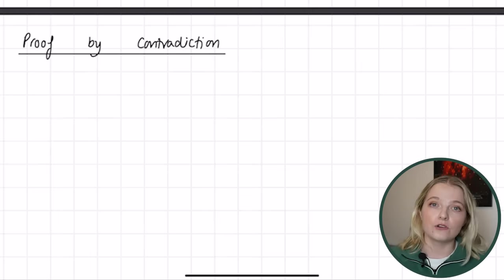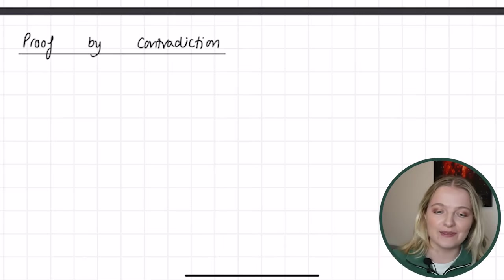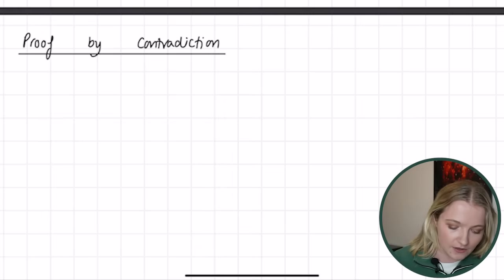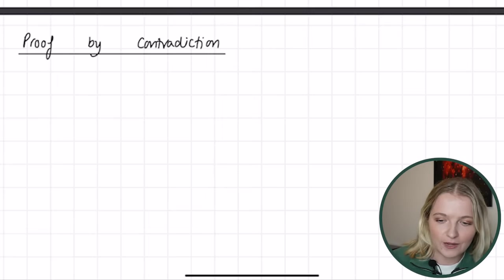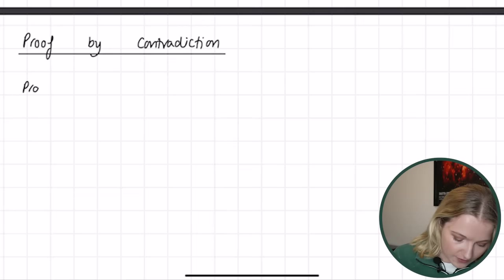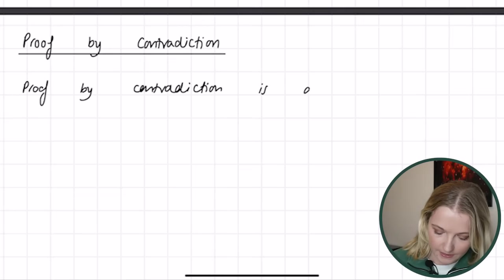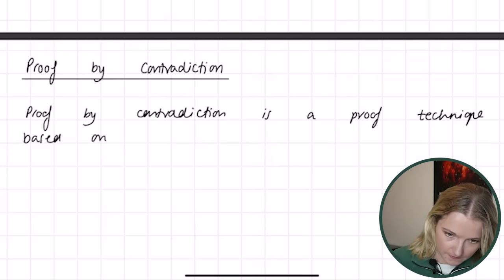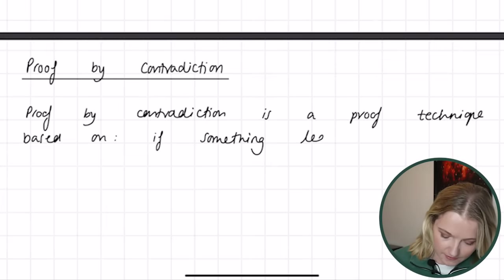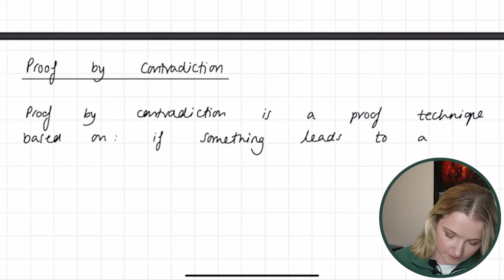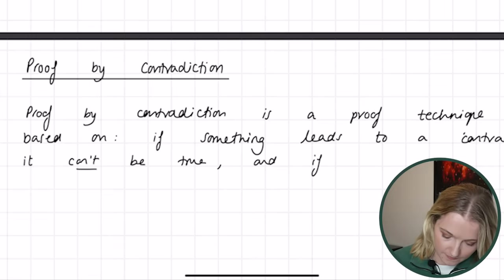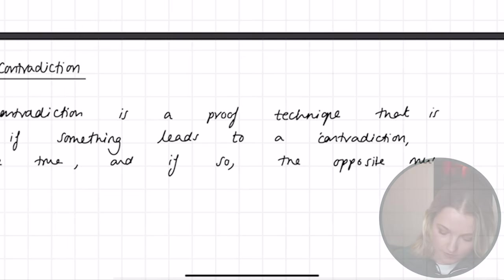You take a statement, start by assuming it's true, and then contradict it. If you can contradict it, you've essentially proved it's not true. To show what I mean, let's formulate a proof — but first, just for reference, I'll write this down: proof by contradiction is a proof technique that is based on the idea that if something leads to a contradiction, it can't be true, and if so, the opposite must be true.